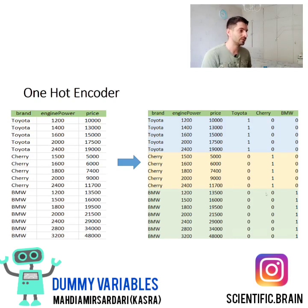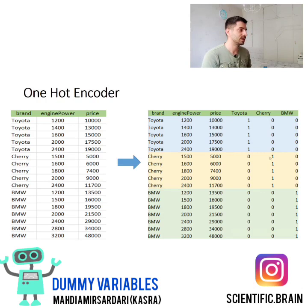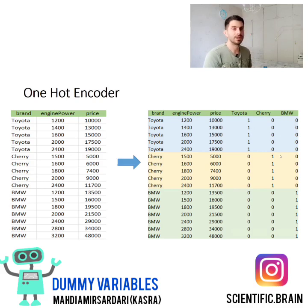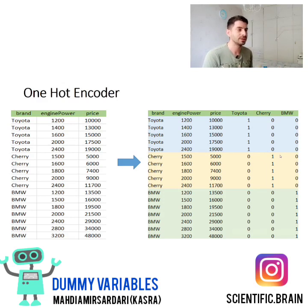We created these three new columns because we had three categories: Toyota, Cherry, and BMW, and we assign binary values for them. For each section devoted to each category, number one is assigned to its own column title. For example, for the Toyota section, the Toyota column is filled with number one and the other variables are zero. For the Cherry section, number one is assigned under the Cherry column and others are zero. For BMW, number one is assigned to the BMW column and others contain zero. These are the dummy variables — Toyota, Cherry, and BMW. The machine learning model can now work with these numeric values, so we can ignore the original string brand column and work with the new columns.